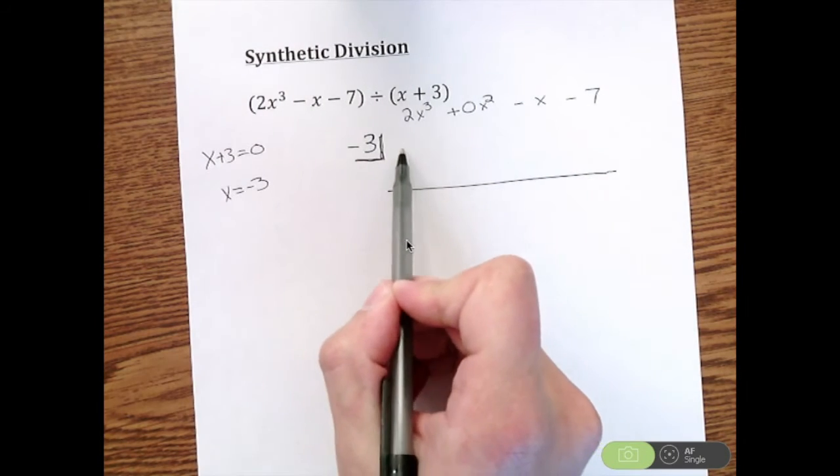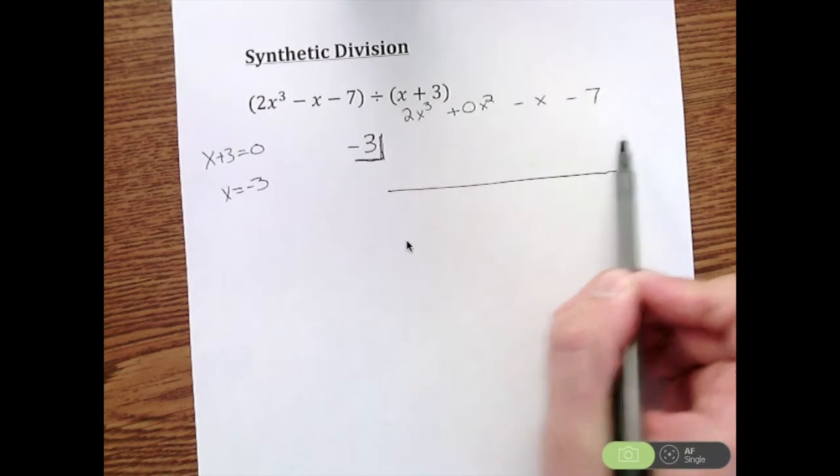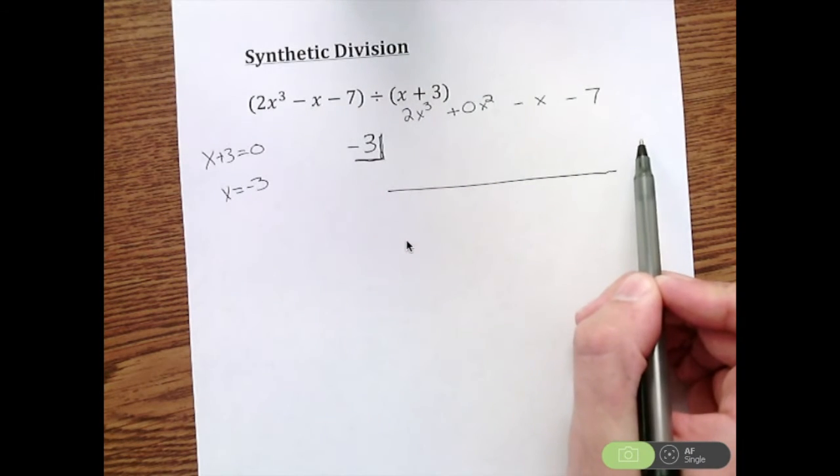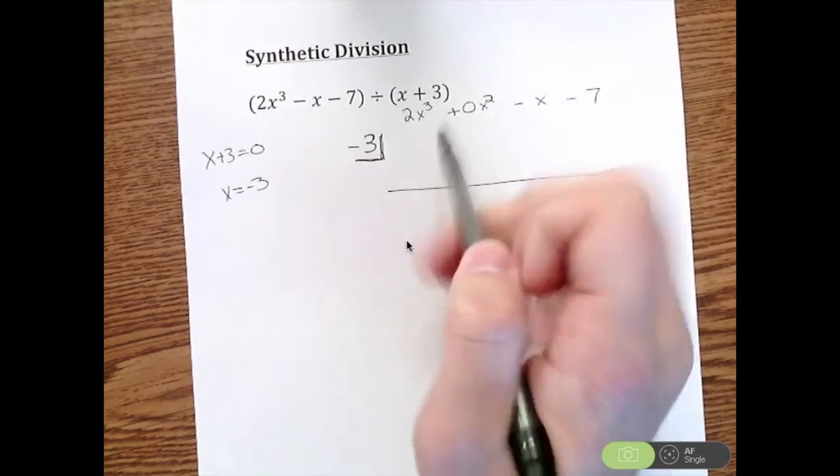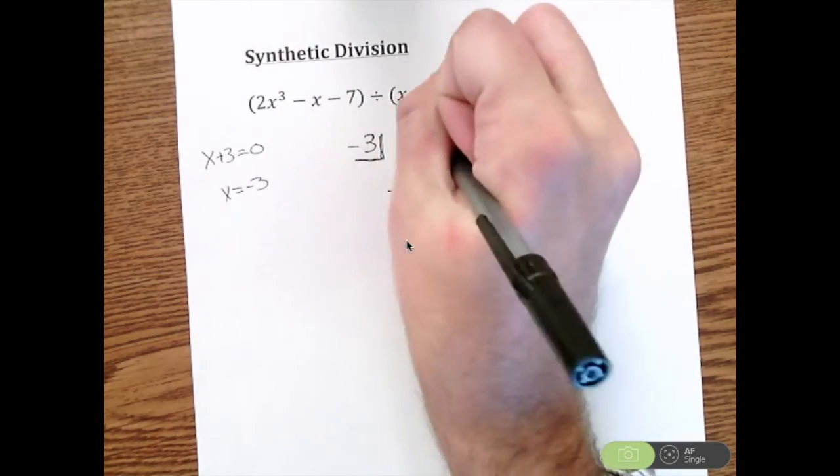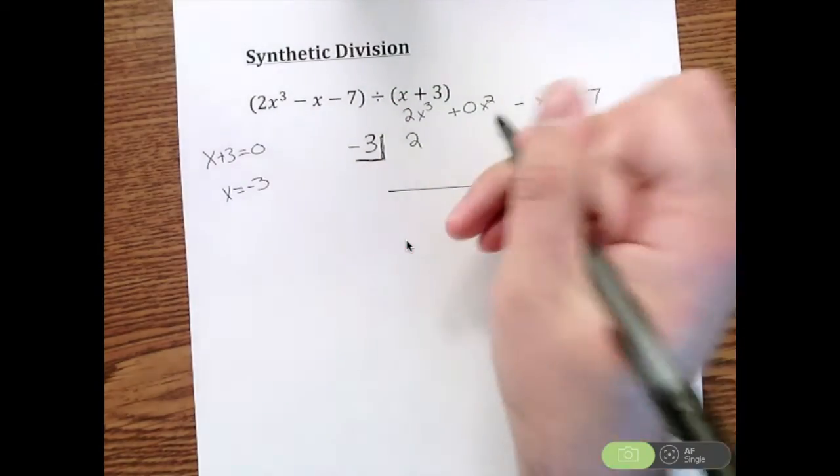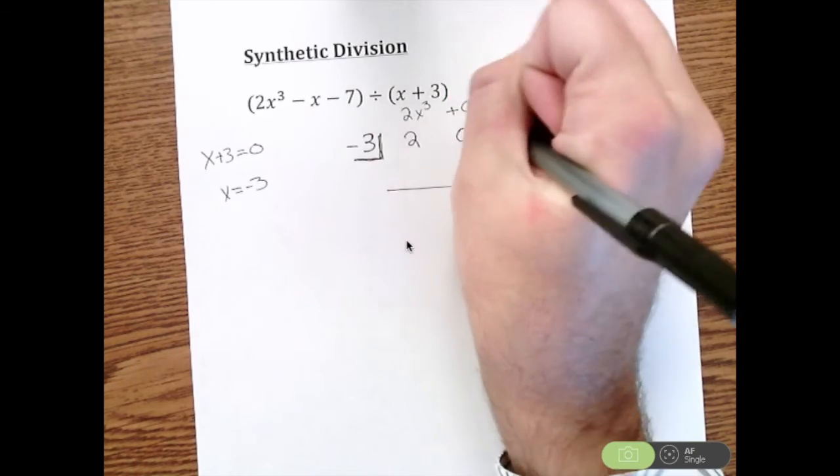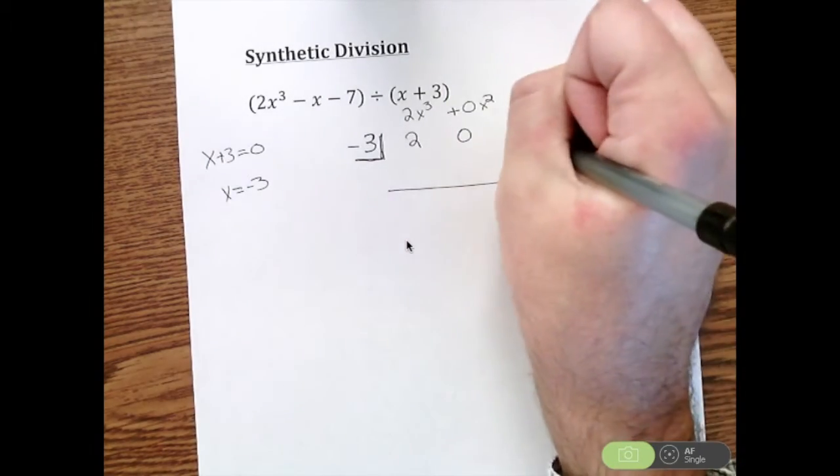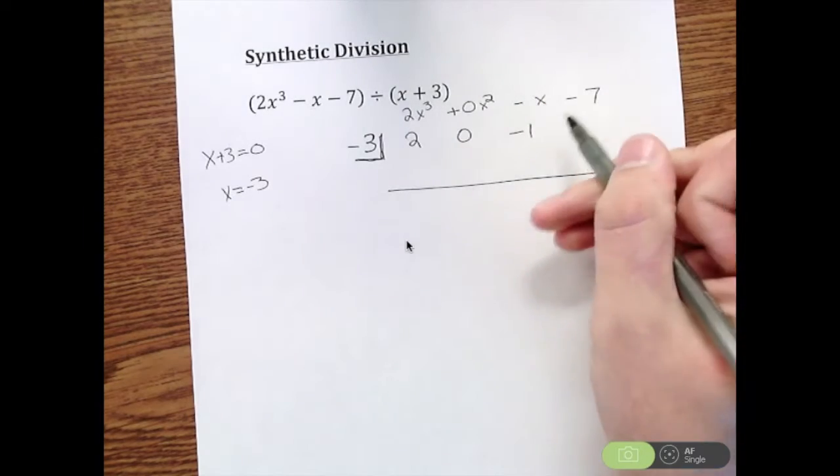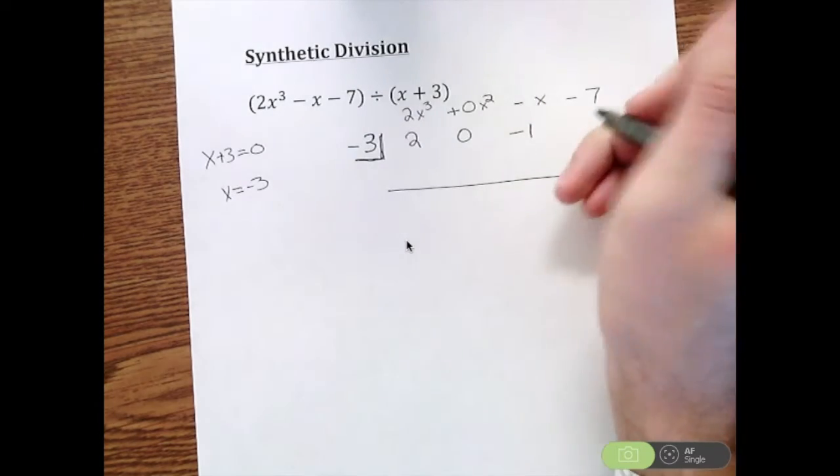Next, what I'm going to take is write a row of numbers here. Now these numbers are all going to be the constants of the standard form polynomial. So I start with a 2 because of the 2x cubed, and then that 0, which is again very important to make sure you have that, and then a negative 1 because that's a negative x, and then negative 7.